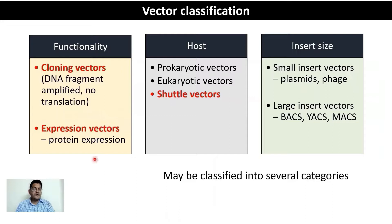In terms of host cell use, vectors can be classified as prokaryotic if resident in a prokaryotic cell, or eukaryotic if resident in a eukaryotic cell. Vectors that can exist in both prokaryotic and eukaryotic cells are known as shuttle vectors.